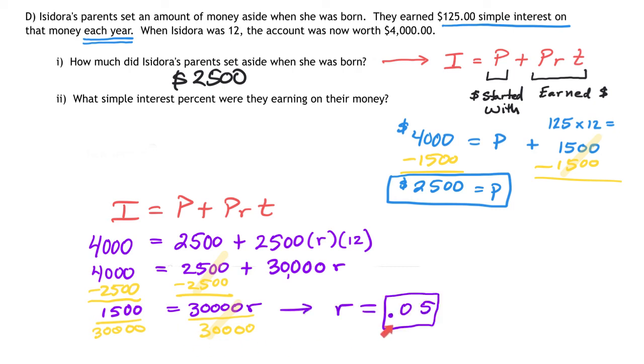Finally, I'll divide by 30,000 on both sides, and that decimal comes out to 0.05. That's the decimal of the percent, but if it asks what's the simple interest percent, the answer is 5%, because you move the decimal place over two places to the right to change it back to a percent. The final answer to part two is 5%.